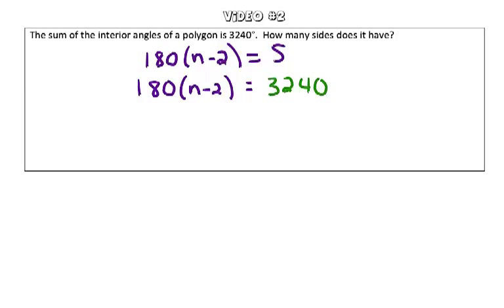Our goal is to get n by itself, so using inverse operations, we're going to divide both sides by 180 degrees. We are left with n minus 2 equals 18.